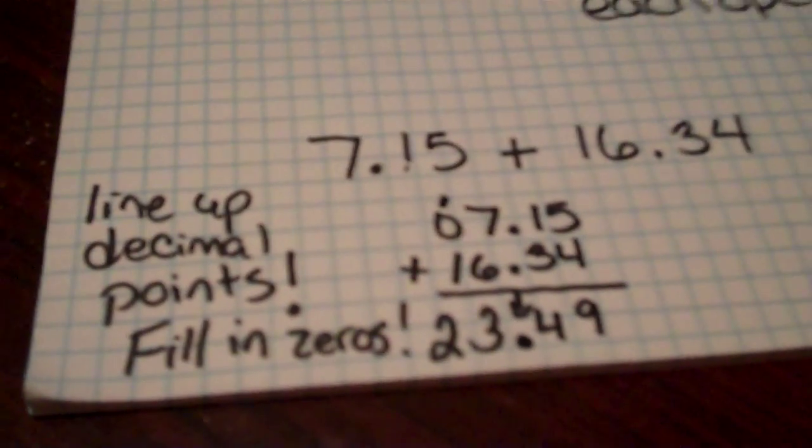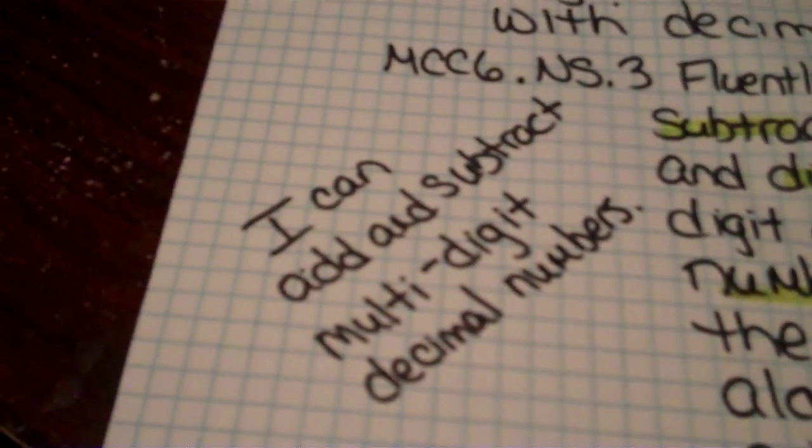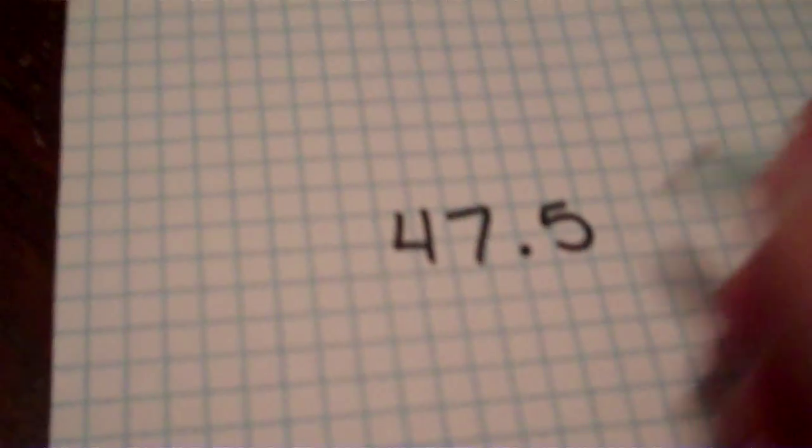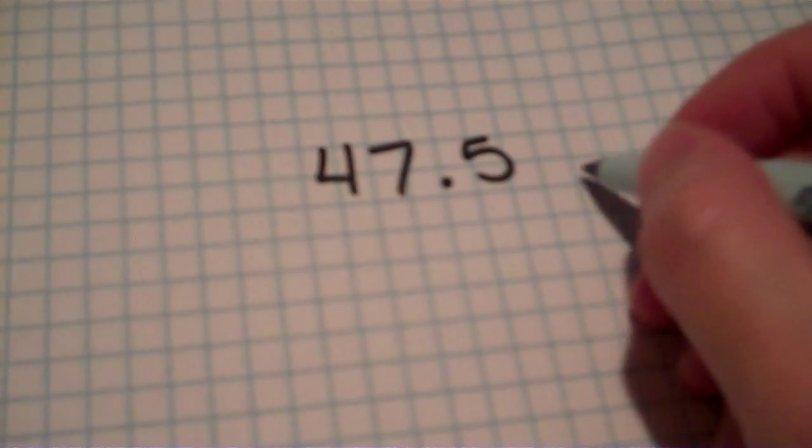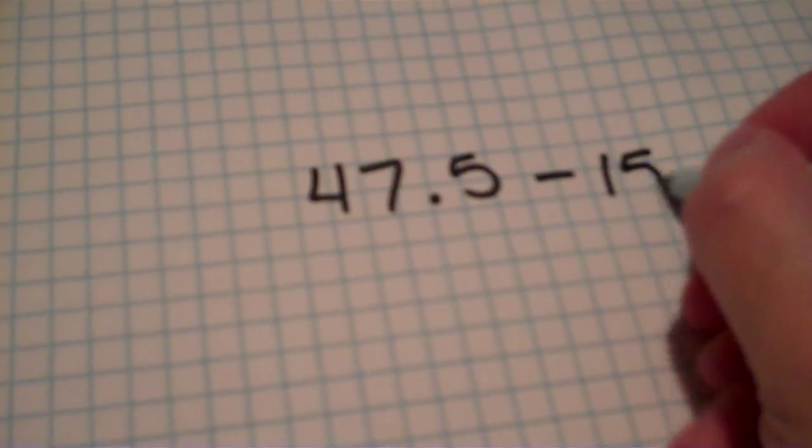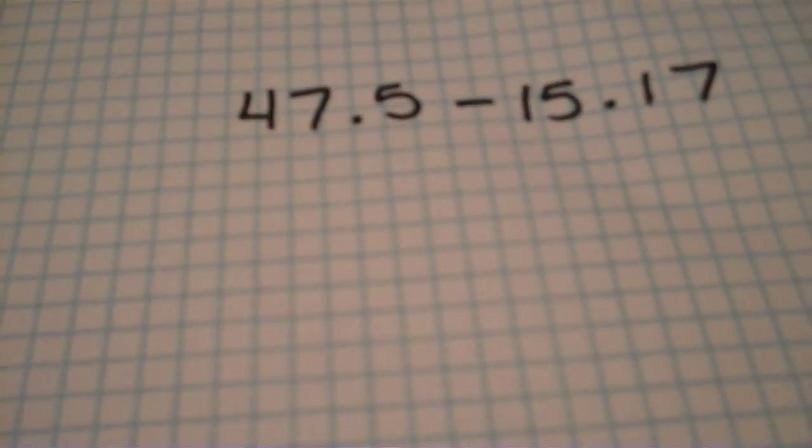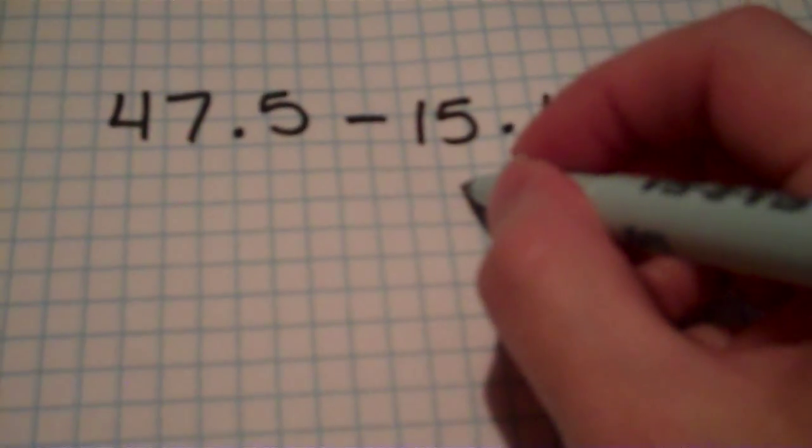And you do the same thing with subtraction. Alright. So let's look at a subtraction problem. 47 and 5 tenths minus 15 and 17 hundredths. Well, if we do the same thing, let's write it vertically.